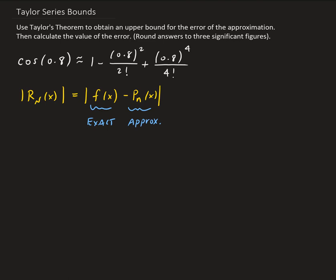In general, as n goes to infinity — as the number of terms approaches infinity — this residual is going to approach 0. So let's first calculate the upper bound. We want to calculate the upper bound for the error.